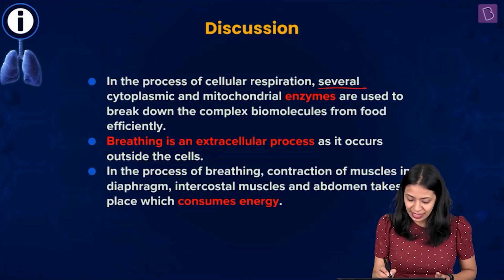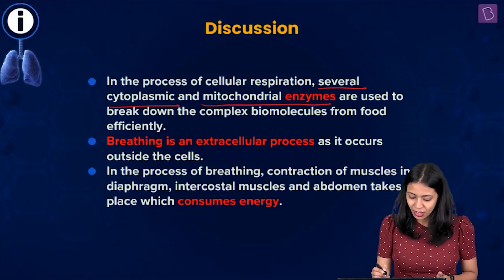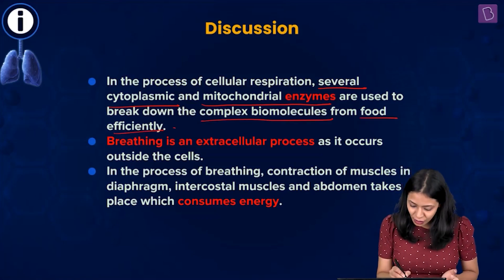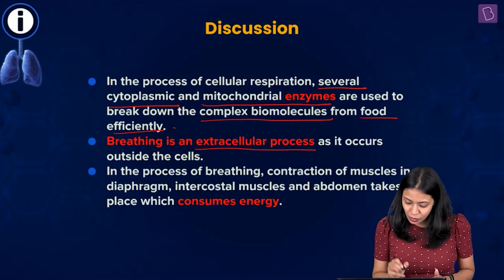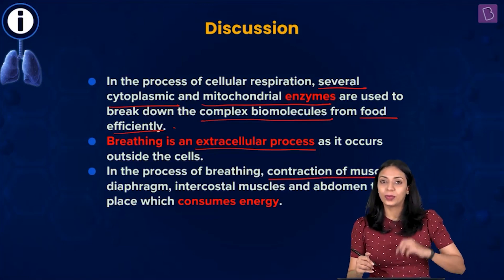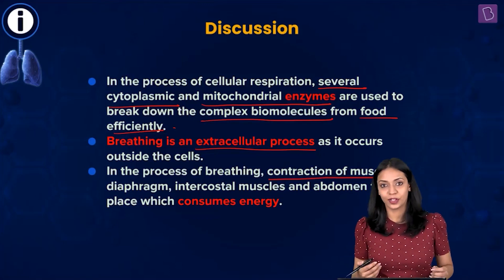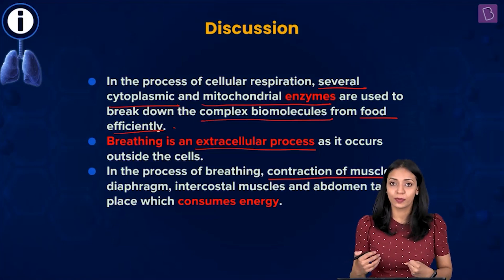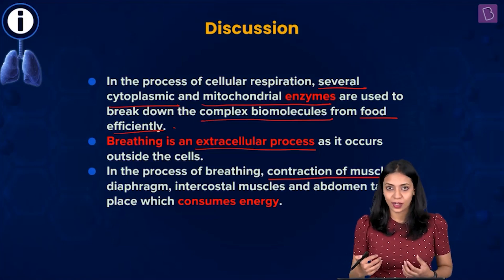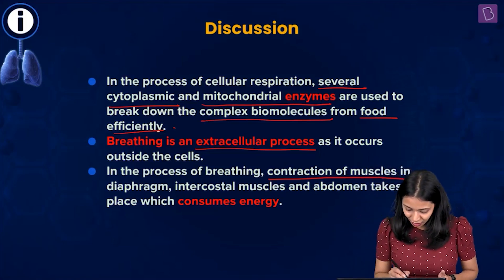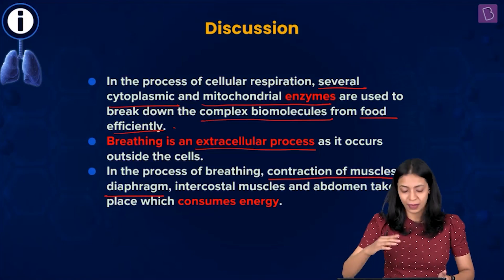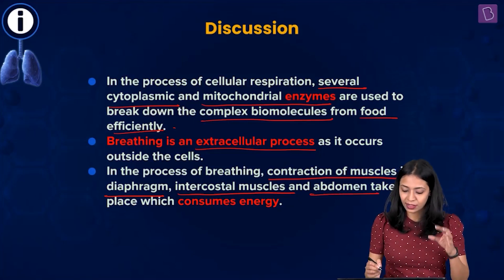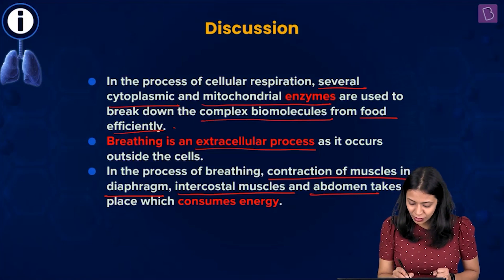In the process of cellular respiration, several cytoplasmic as well as mitochondrial enzymes are used to break down complex biomolecules from food efficiently. Breathing is an extracellular process as it occurs outside the cells. In the process of breathing, contraction of muscles takes place — changes in intrapulmonary pressure are achieved by contracting and relaxing certain muscles. The muscles contracting during breathing are the diaphragm, intercostal muscles between the ribs, and abdominal muscles.